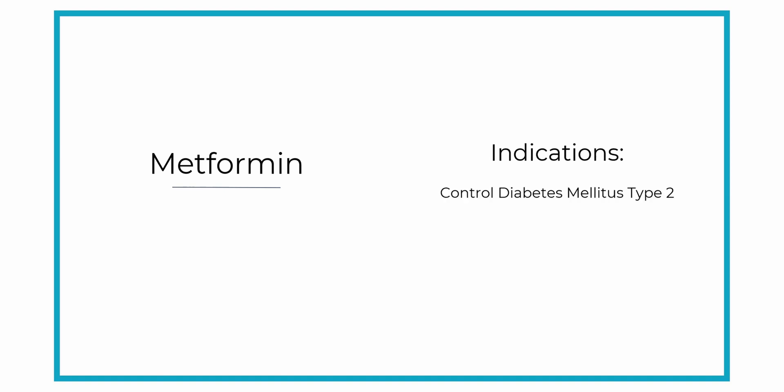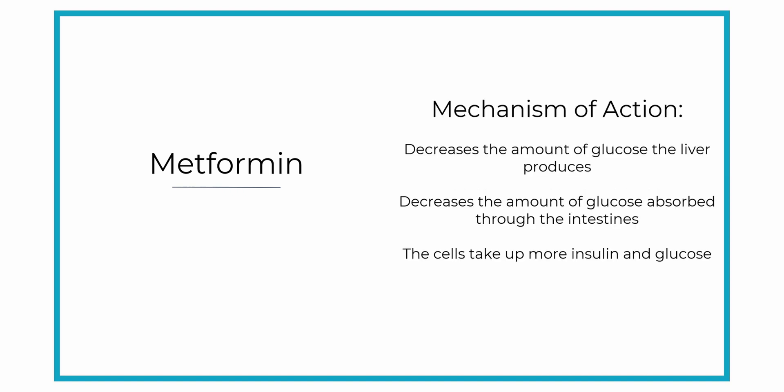The indications for metformin — what metformin is used for — is to control type 2 diabetes mellitus. There are three primary ways that metformin works in the body: it decreases the amount of glucose that the liver makes, it decreases the amount of glucose that's absorbed through the intestines, and it makes the cells take up more insulin and therefore take up more glucose as well.